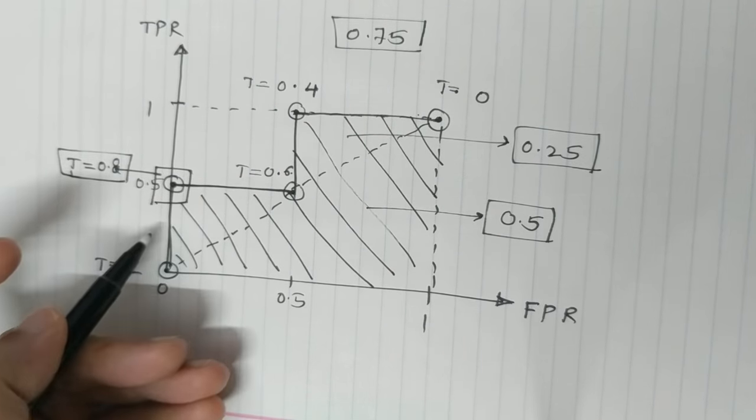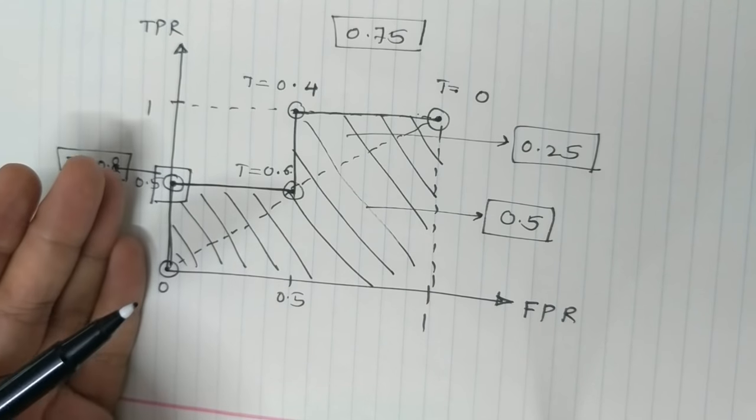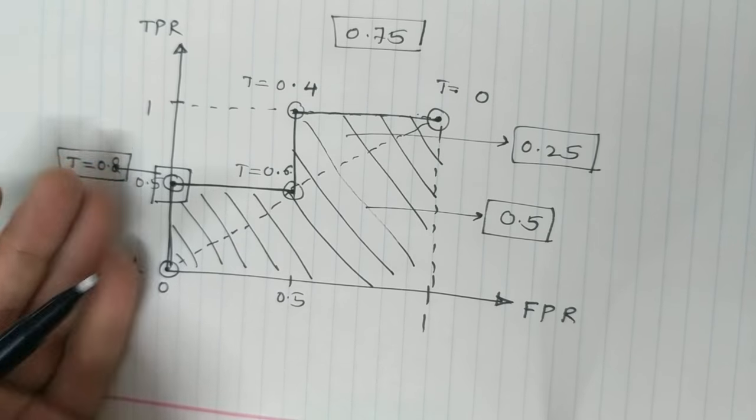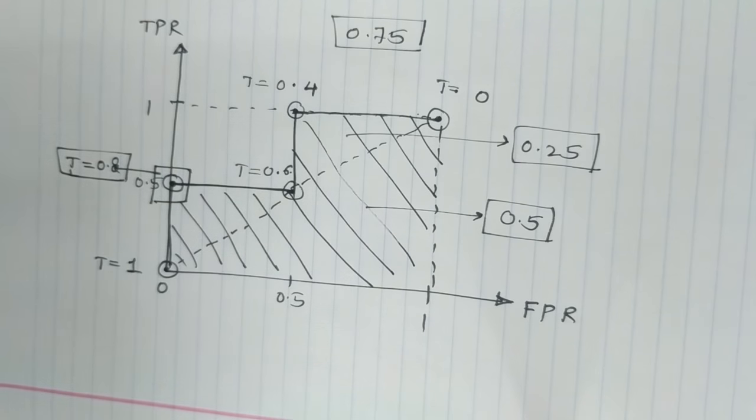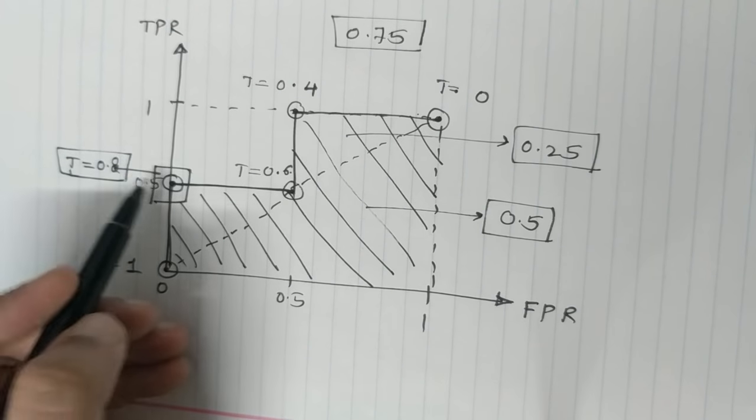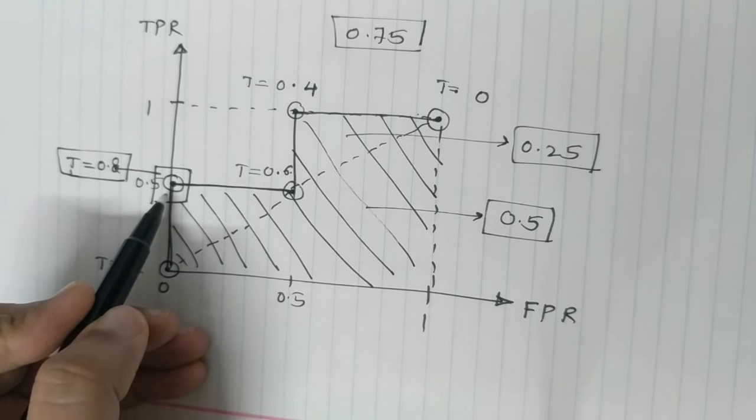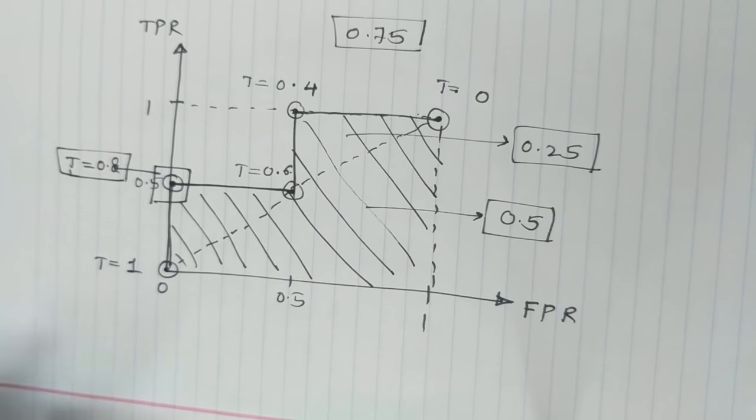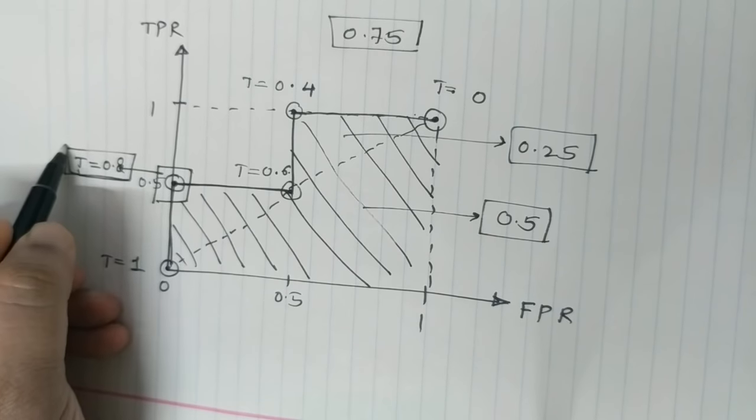What will happen because of this is you will have true positive rate to be 0.5, which ideally you would be wanting it to be more. But in this case, you won't have any false positives coming in. This is one way to interpret the threshold. So you can keep a threshold of 0.8.